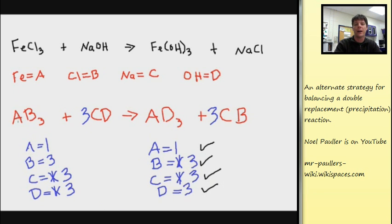Now I can take these coefficients and add them into my equation for this chemical reaction. And that will balance things. So I'm going to write a three in front of NaOH and I'm going to write a three in front of NaCl.